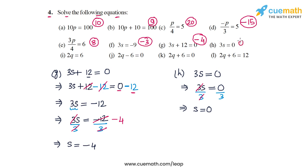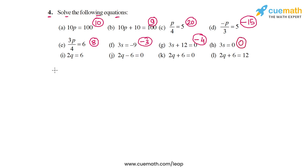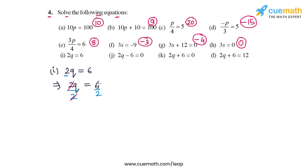In part i the equation is 2q equal to 6. To get rid of this 2 on the LHS we divide both sides by 2. The 2s cancel out on the LHS and 6 by 2 is 3, so we get q equal to 3. This is the solution in part i: q equal to 3.